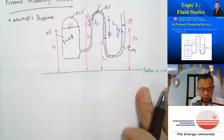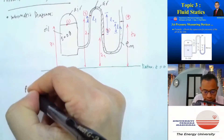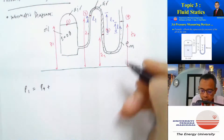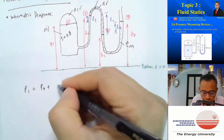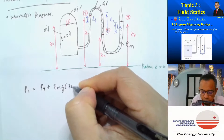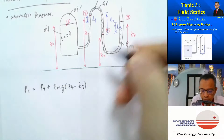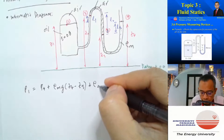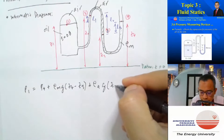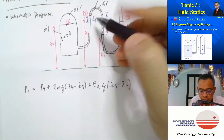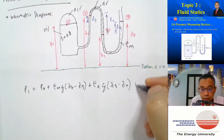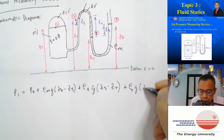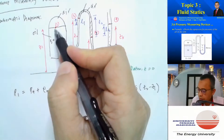Now I can write the equation for p1 directly. p1 equals p4 plus rho_mercury × g × (z4 − z3), which gives the pressure contribution from mercury, plus rho_air × g × (z3 − z2) for air, plus rho_oil × g × (z2 − z1) for the oil column.